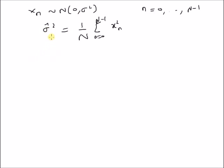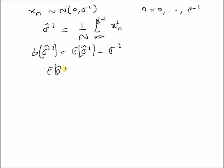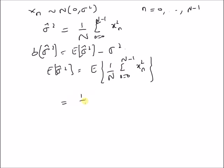The first property we have to verify is that the bias is zero. The bias of sigma-hat squared is defined as the expectation of sigma-hat squared minus sigma squared. So the expectation of sigma-hat squared equals the expectation of (1/n) * sum_{n=0}^{N-1} x²(n). Since expectation is a linear operator, we can take it inside the summation, giving us (1/n) * sum_{n=0}^{N-1} E[x²(n)].